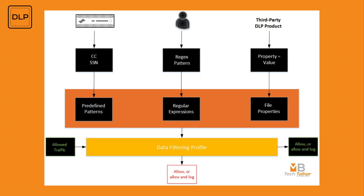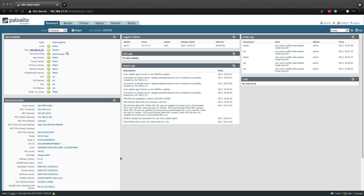In PAN-OS 8.0, data filtering was enhanced to work alongside third-party endpoint data loss prevention solutions that can add file properties to mark documents as sensitive. For example, a Word document could be stamped with the word 'confidential' or 'restricted', and we can configure the firewall to scan the file properties to make sure the right action is taken. In PAN-OS 9.1 there are 22 predefined patterns to choose from. The Palo Alto firewall has three data pattern types: predefined patterns, regular expressions, and file properties.